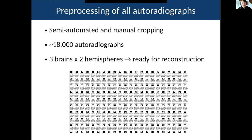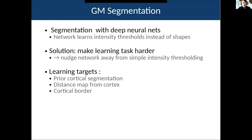Some other work I've been doing is less technically sophisticated: the work presented so far was just for one hemisphere from one brain, but we actually have a lot more data. Using semi-automated and manual techniques, I've gone through the 18,000 autoradiographs we have and cropped them so we can now reconstruct all three brains with both hemispheres.